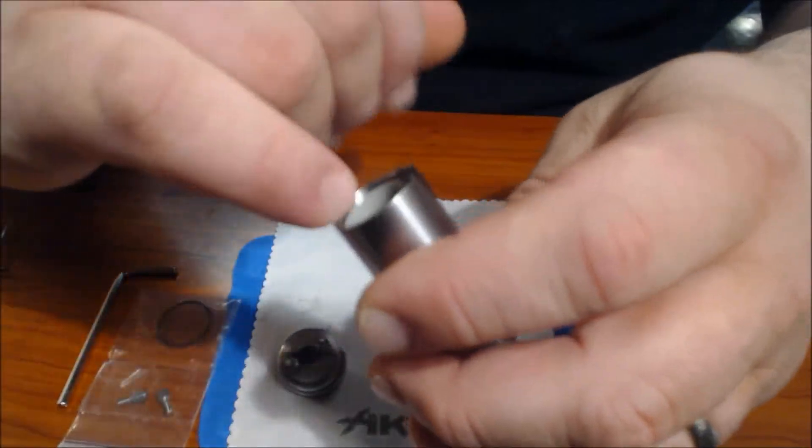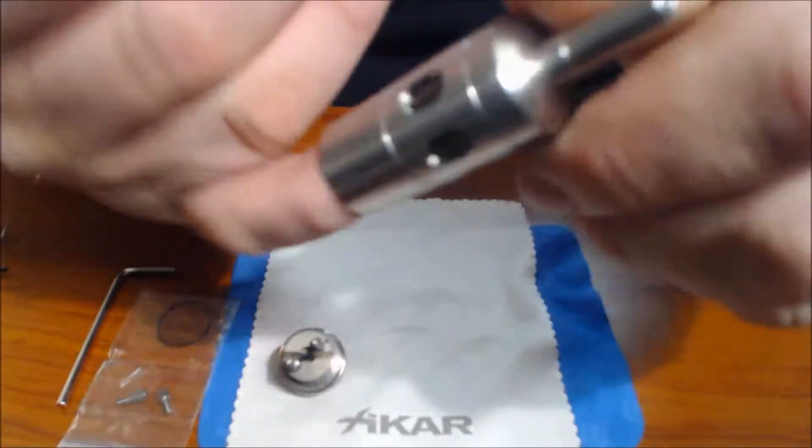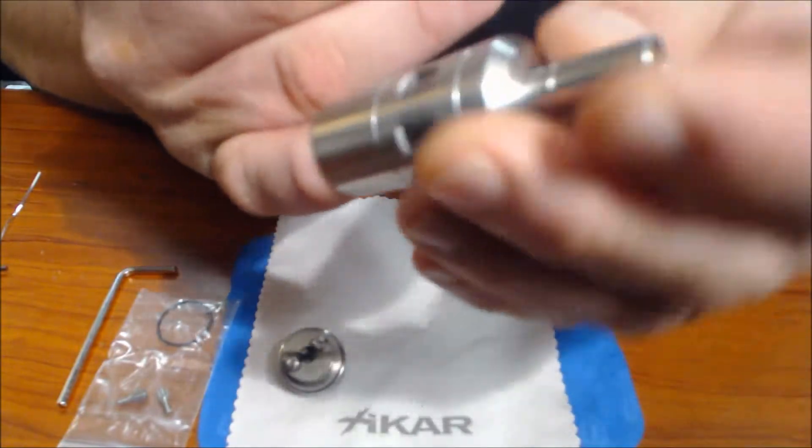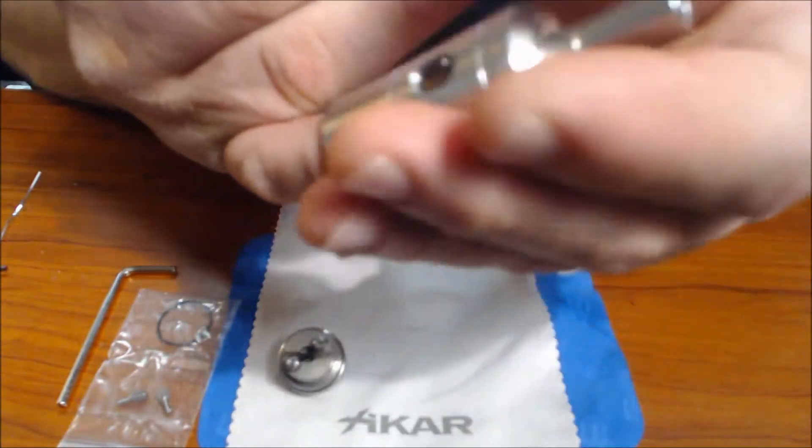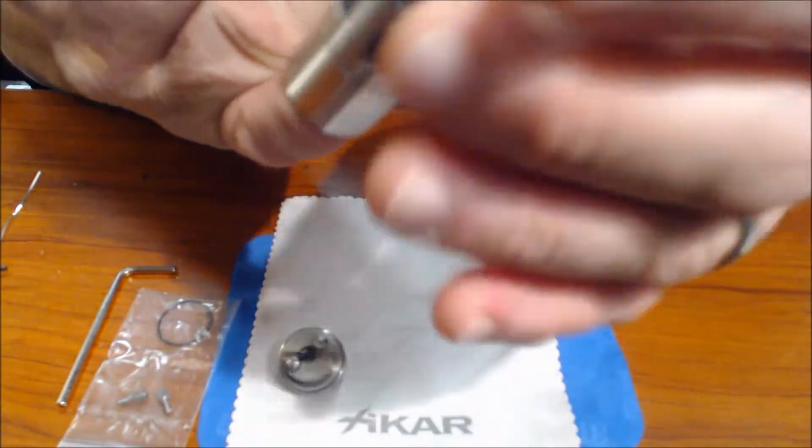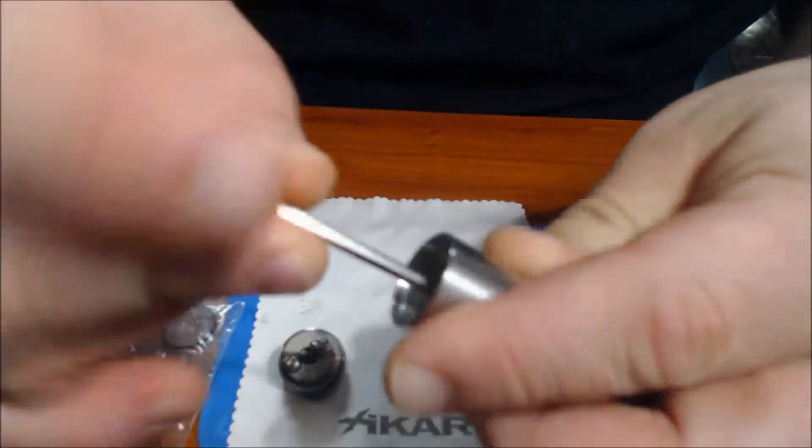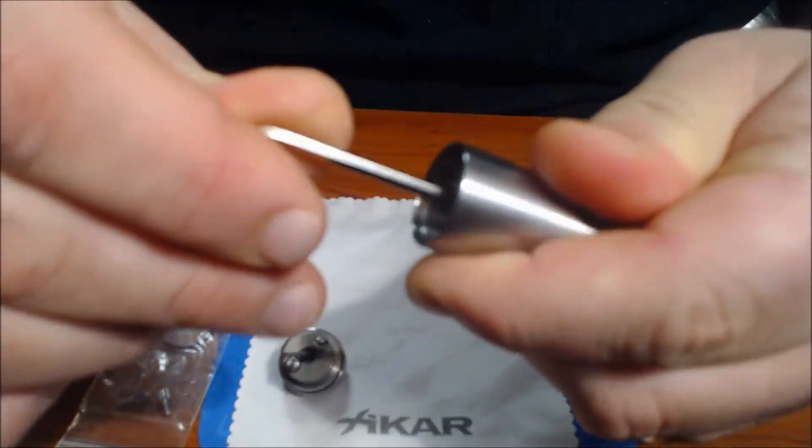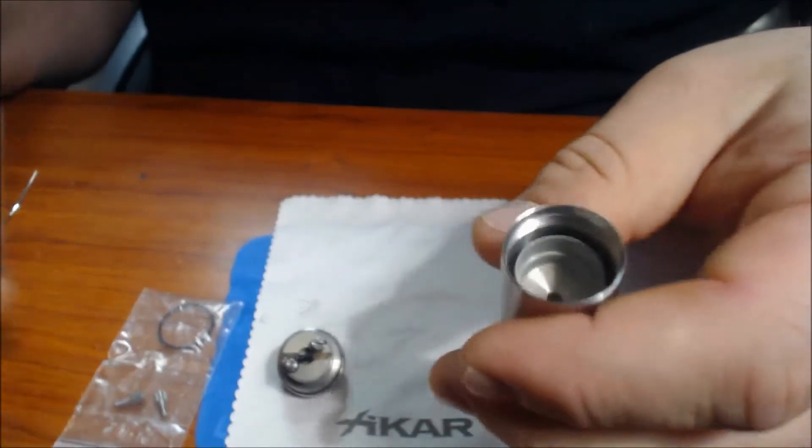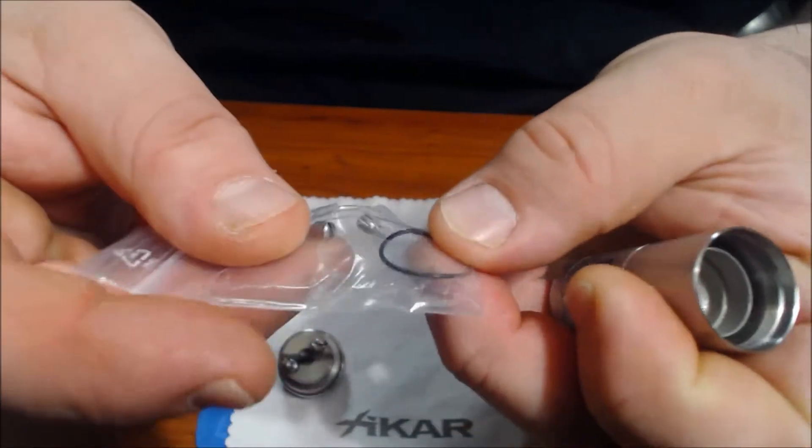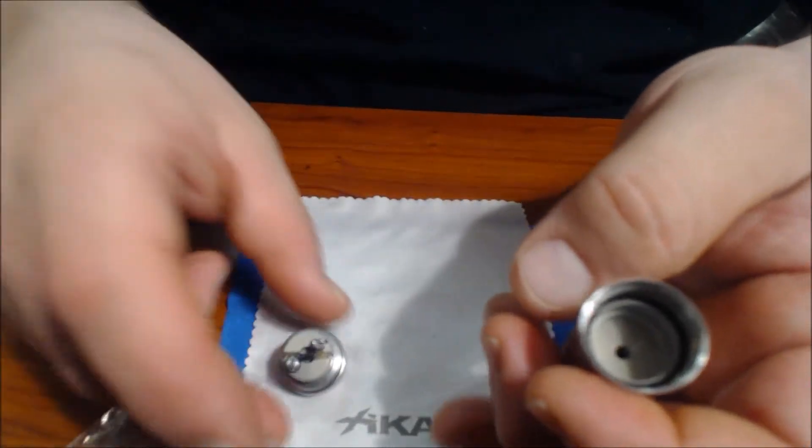Screw your chimney in there. I started with my finger. And then it comes with an Allen wrench. I just tightened it down a little bit. It also came with a couple of screws and an O-ring for your Addy deck.